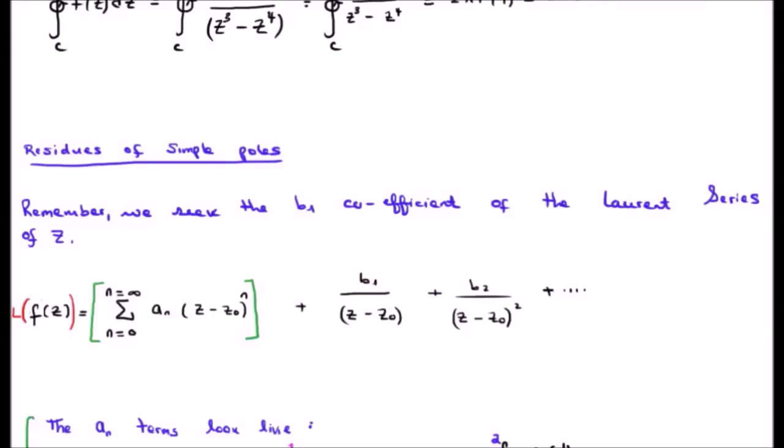Let's discuss the residues of simple poles. Remember now a simple pole is one where the exponent on the power, which is of course going to be in the denominator, is 1. In order to calculate the residue we need to get the B sub 1 coefficient in the Laurent series. And at this point we've seen the Laurent series written in this manner a number of times.